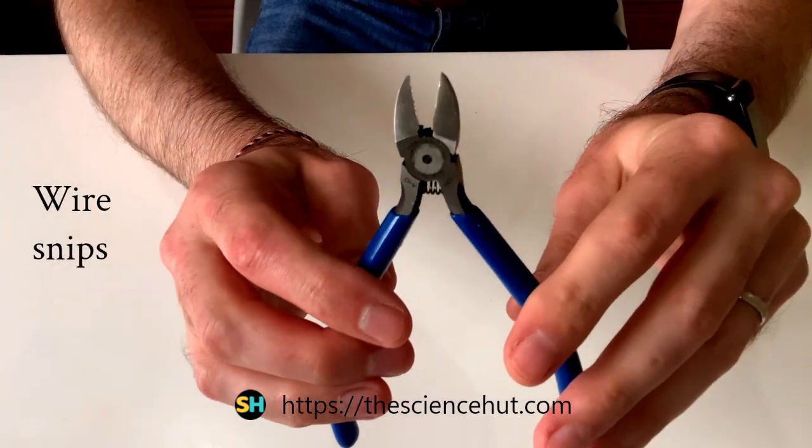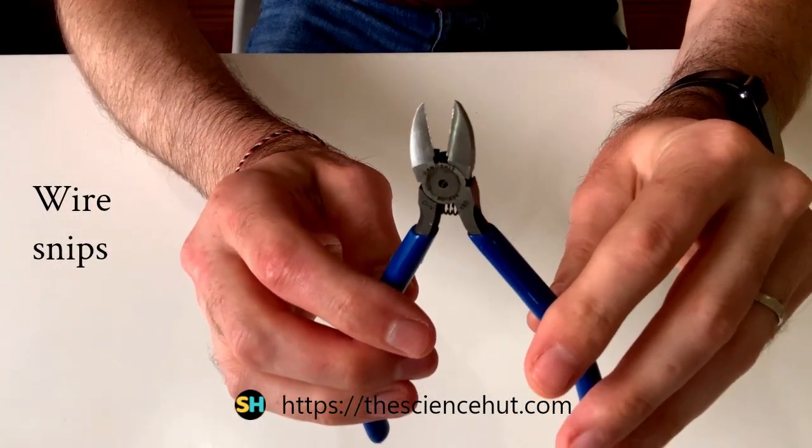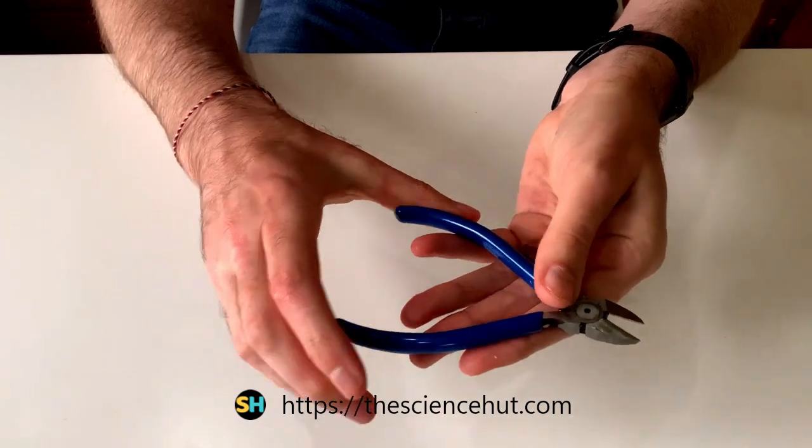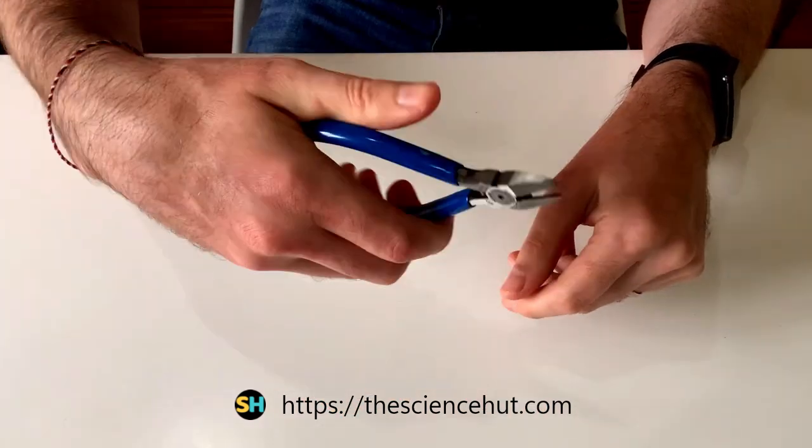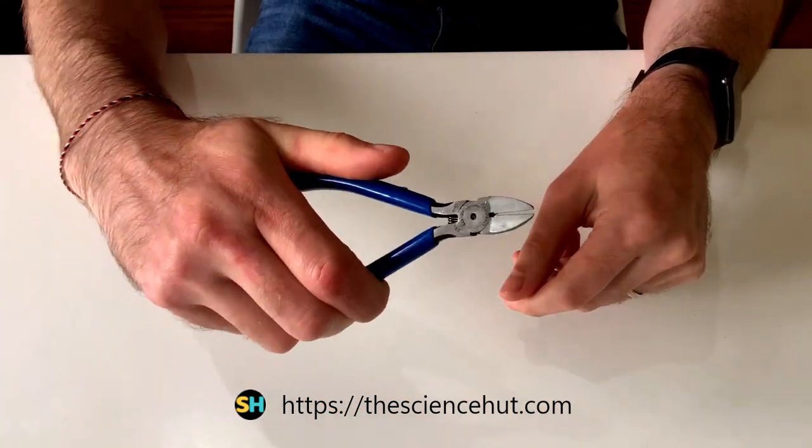A wire snips. This is essential for snipping off the ends of electronic component stems after soldering. The fine tip enables you to get in close to the printed circuit board.